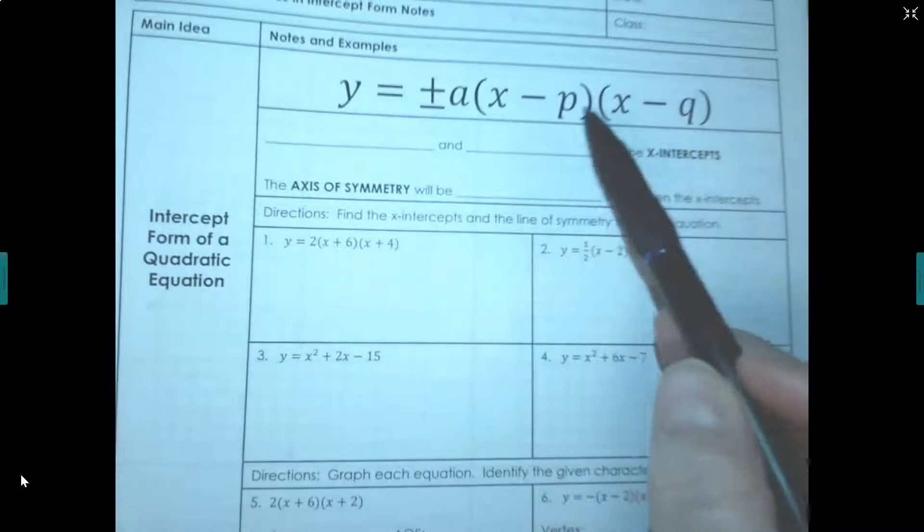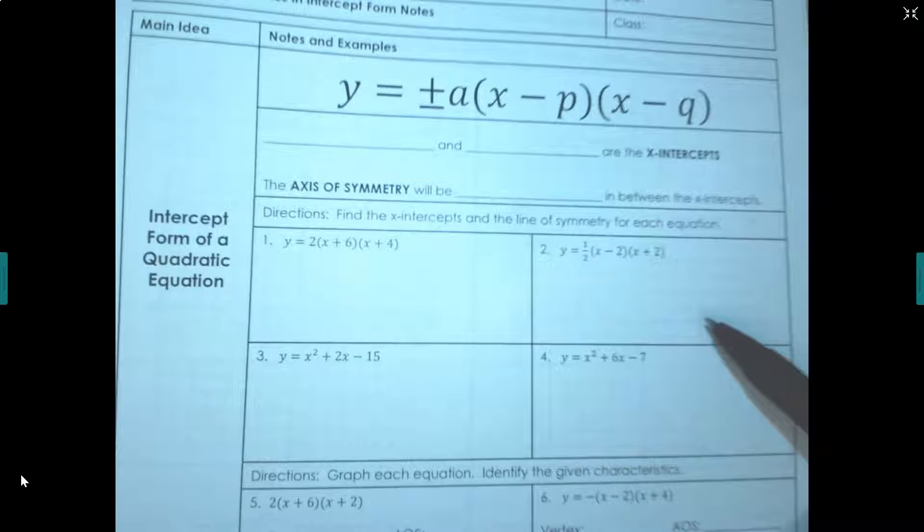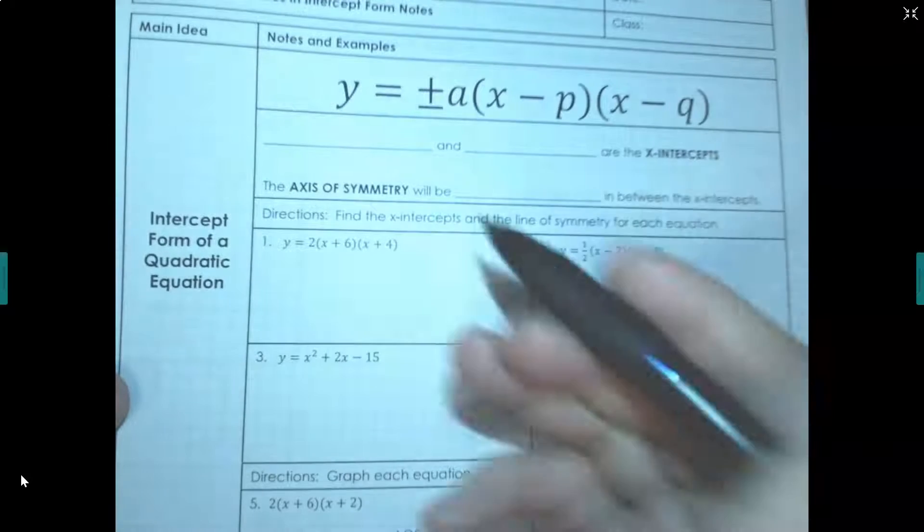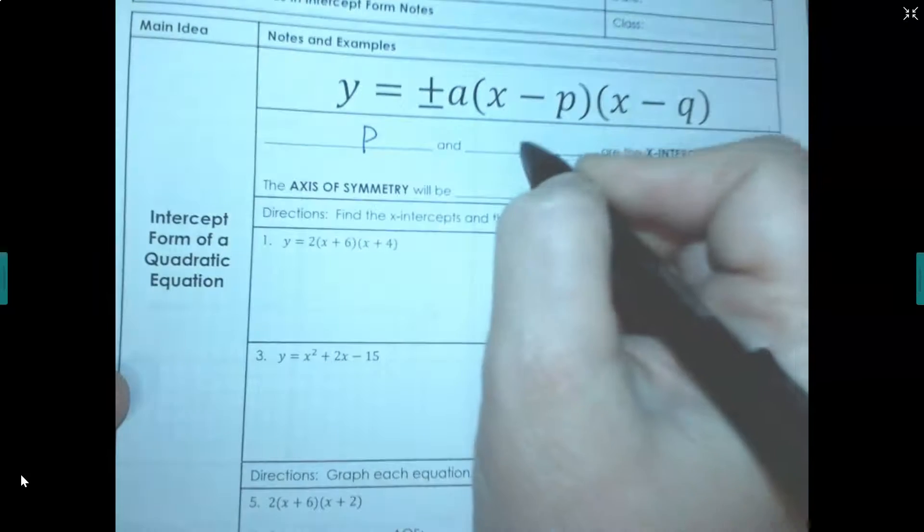Intercept form is really when you've factored the problem and then you can graph the intercepts. The values p and q here are the x-intercepts.